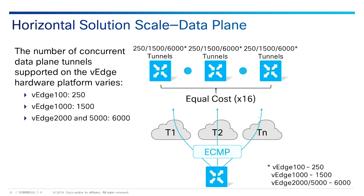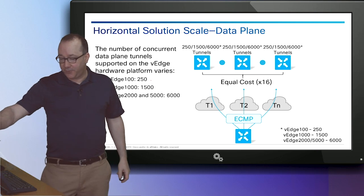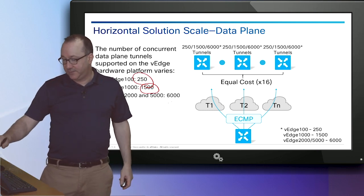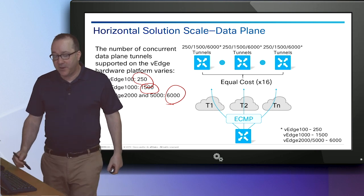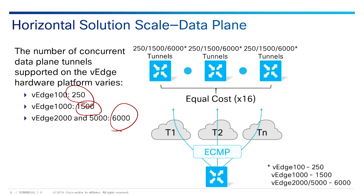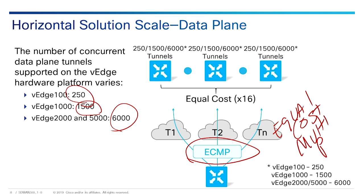On the horizontal side, the number of data plane tunnels supported on the vEdge varies. The vEdge 100 supports up to 250 tunnels, and the 2000 and 5000 models support 6,000 tunnels. We also have equal cost multi-pathing — ECMP — between transports. This means if I have multiple connections, I'm going to load balance across them.